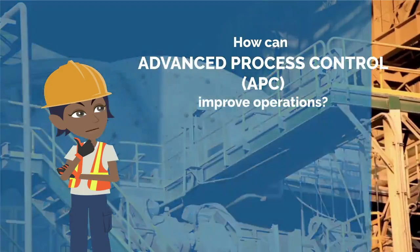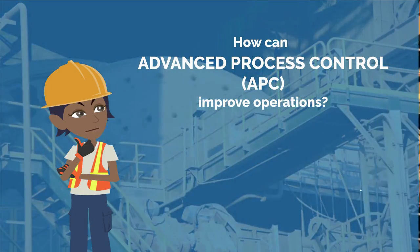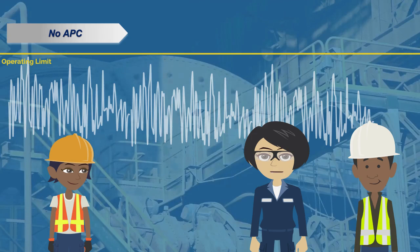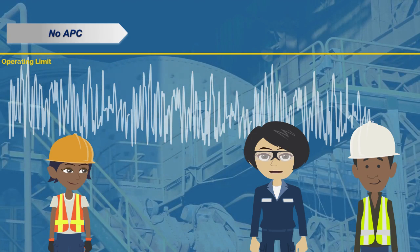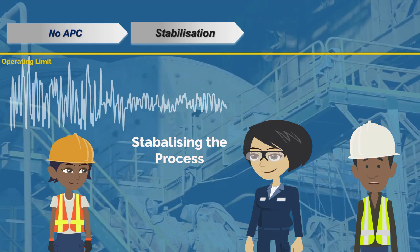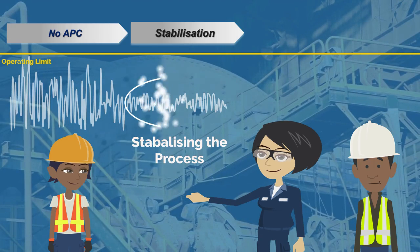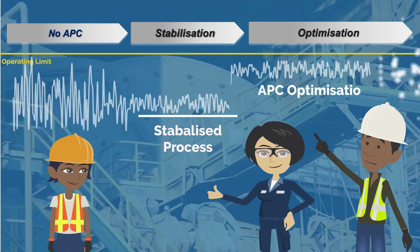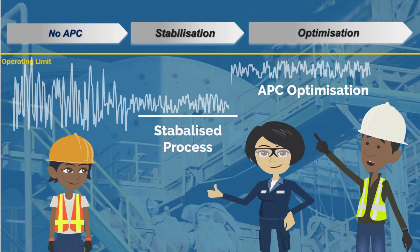How can advanced process control improve operations? APC is a control and optimization technology. We use this technology to optimize a process. First we stabilize the process, and then we move the process to a new profitable operating point.